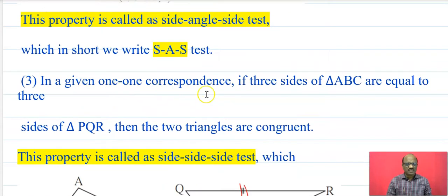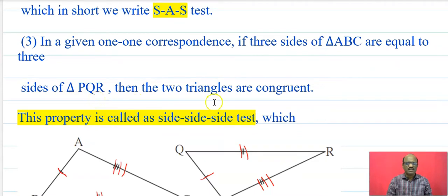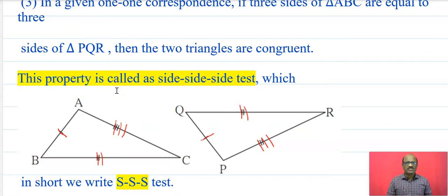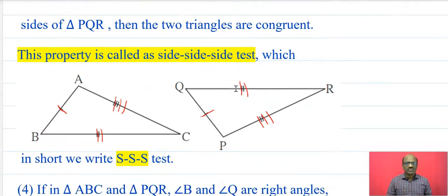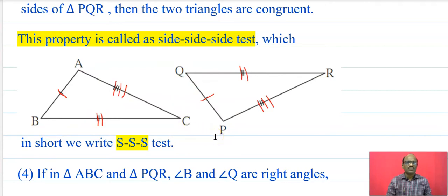In a given one-to-one correspondence, if three sides of triangle ABC are equal to three sides of triangle PQR, then the two triangles are congruent. This property is called the side-side-side test, which in short is written as the SSS test. In triangle ABC and triangle PQR: segment AB is congruent to segment PQ, segment BC is congruent to segment QR, and segment AC is congruent to segment PR. Therefore triangle ABC is congruent to triangle PQR.